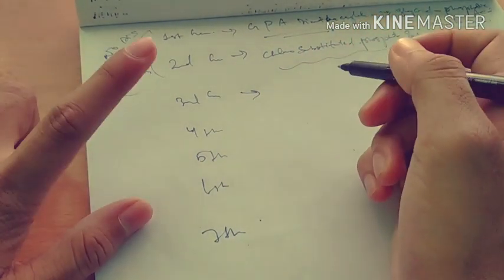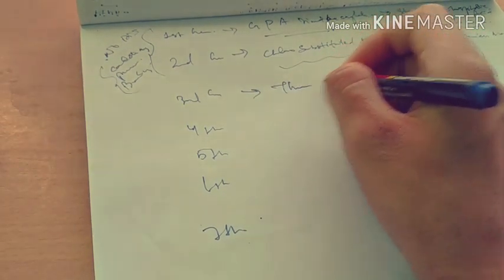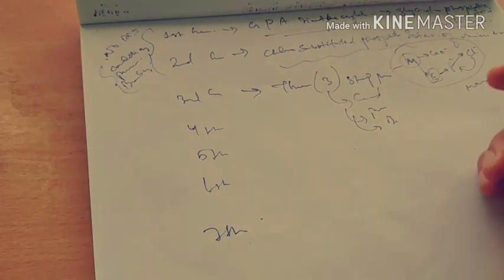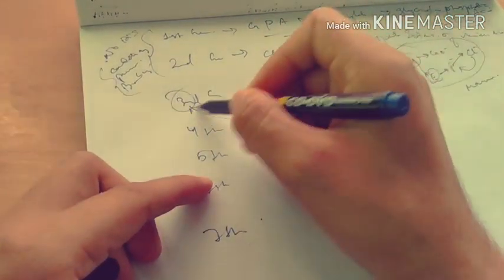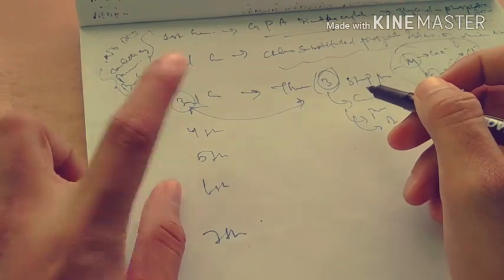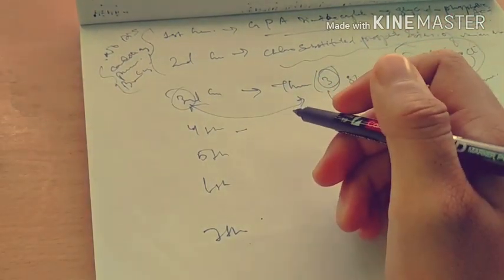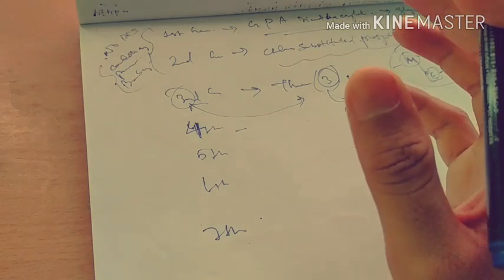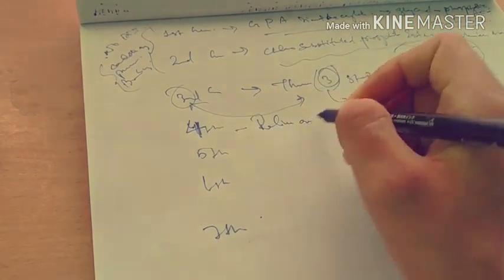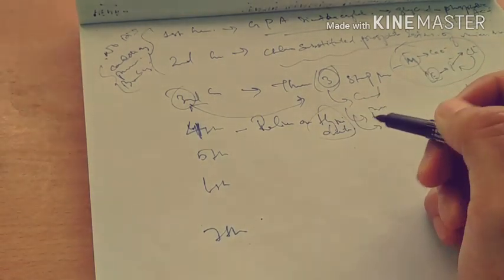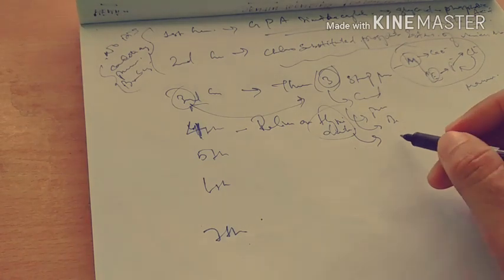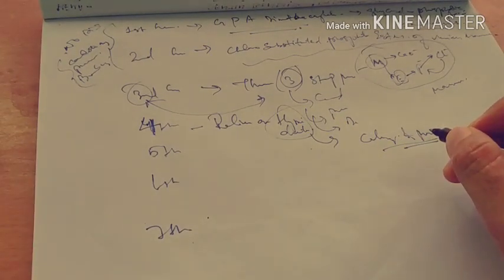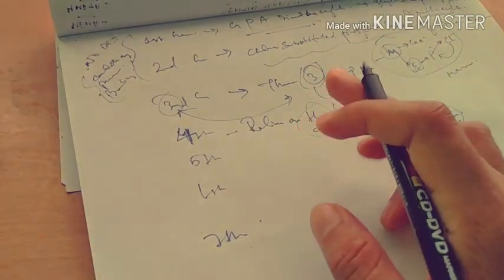Third generation: this is the first generation of dentin bonding agent to have a proper three-step procedure — conditioning, priming, and bonding — in three separate bottles. Easy to remember: three steps for third generation. Fourth generation relies on the hybridization concept — the hybrid layer formed between the collagen and the primer during bonding. You can remember this because 'hybrid' contains the letter pattern that reminds you of four.